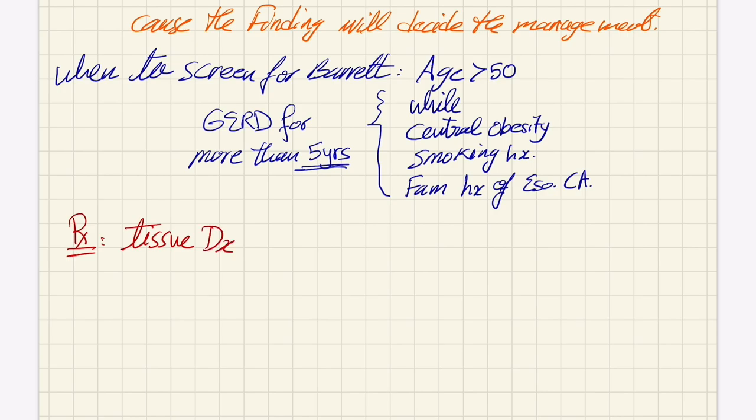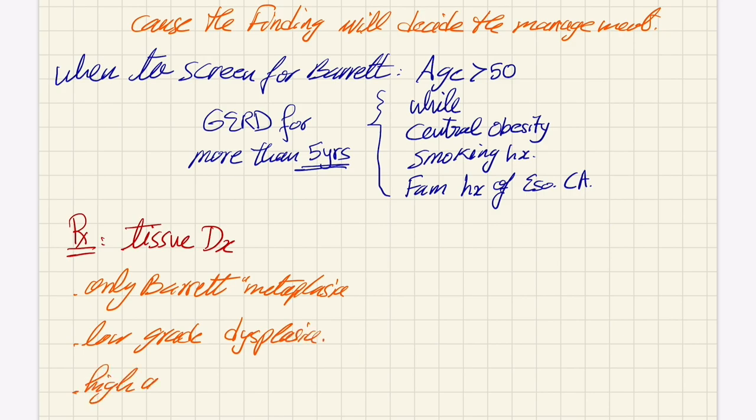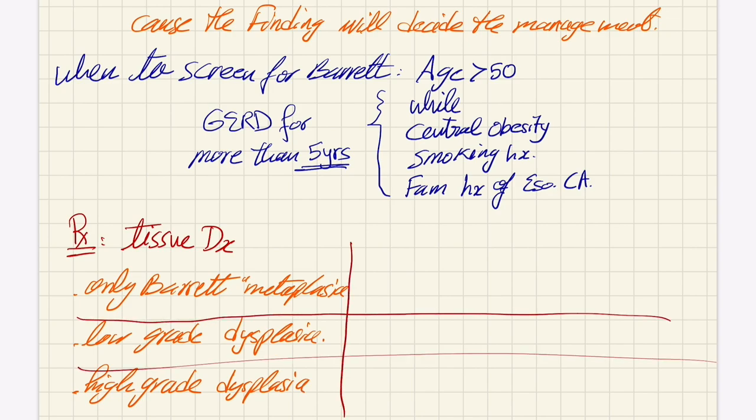Now let's move to treatment of Barrett's. We need tissue biopsy to determine the therapy we're going to offer. Based on the findings on biopsy, we decide what to do. We can see only Barrett's esophagus, which means metaplasia, we can see low-grade dysplasia, or high-grade dysplasia. For Barrett's esophagus metaplasia, we give PPIs and then screening with repeated scopes.